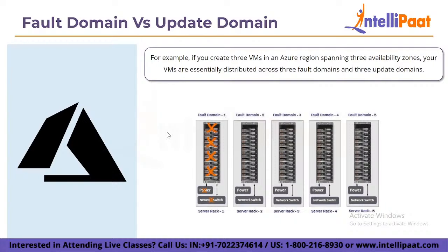For example, if you create a single instance of a virtual machine in Azure, Microsoft guarantees only 99.9% SLA. If you create two or more virtual machines in an availability set, Microsoft promises connectivity to at least one of them 99.95% of the time. However, if you build two or more virtual machines across two or more availability zones, Microsoft ensures access to at least one of these virtual machines 99.99% of the time.